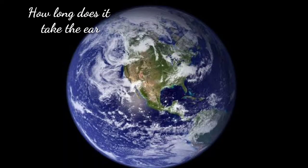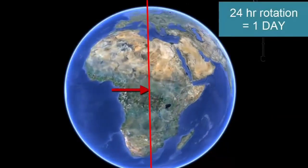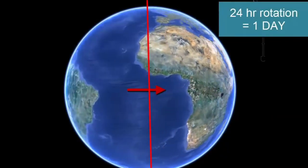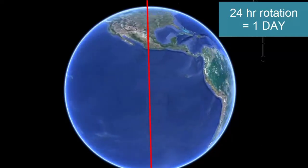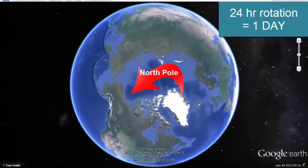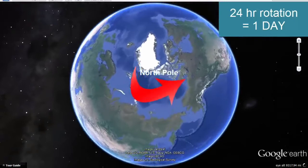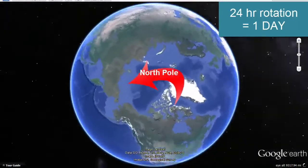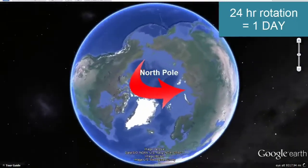How long does it take the Earth to make one complete rotation around its axis? 24 hours, or one day. If we look at the same image of the globe from the top, looking down the axis from the North Pole, we see the Earth is rotating counterclockwise around the North Pole.